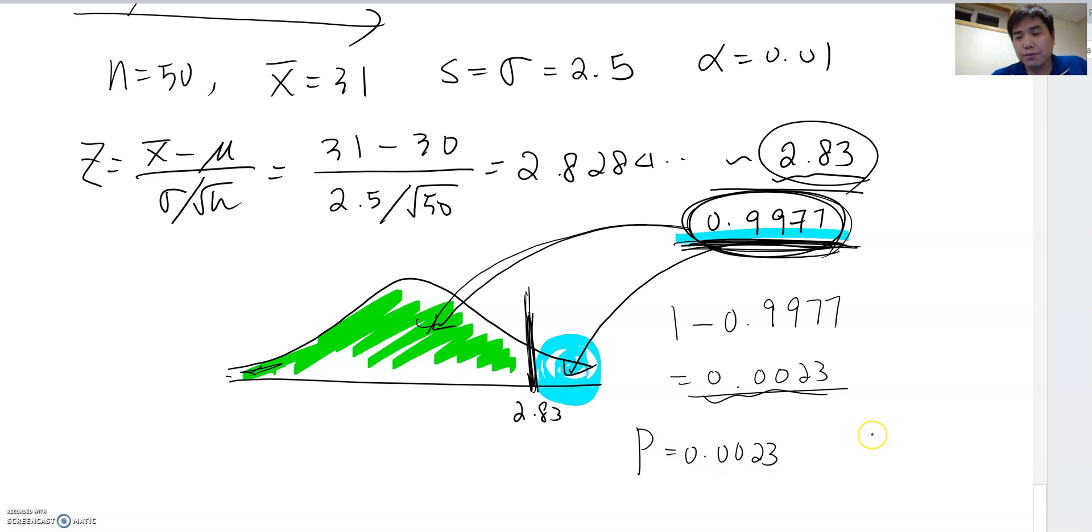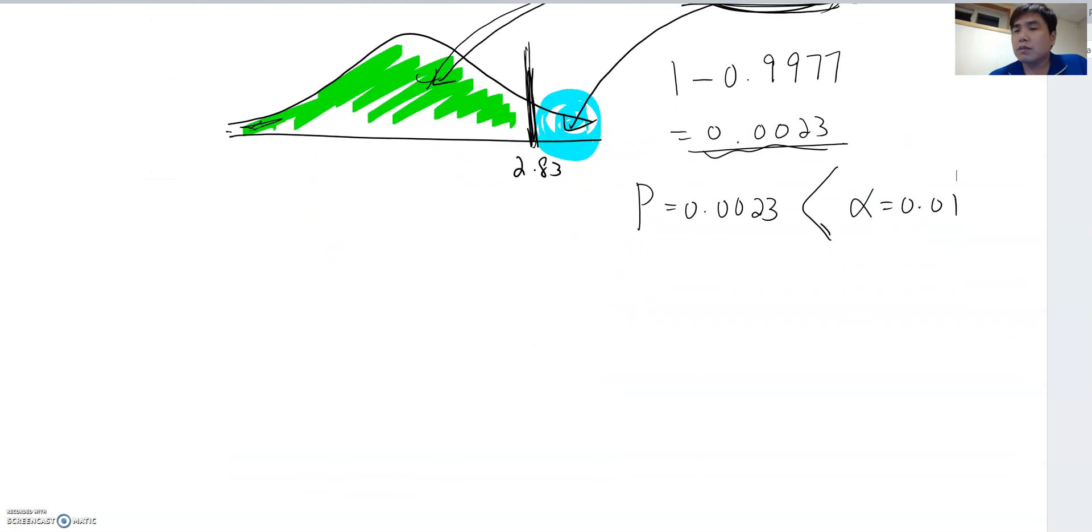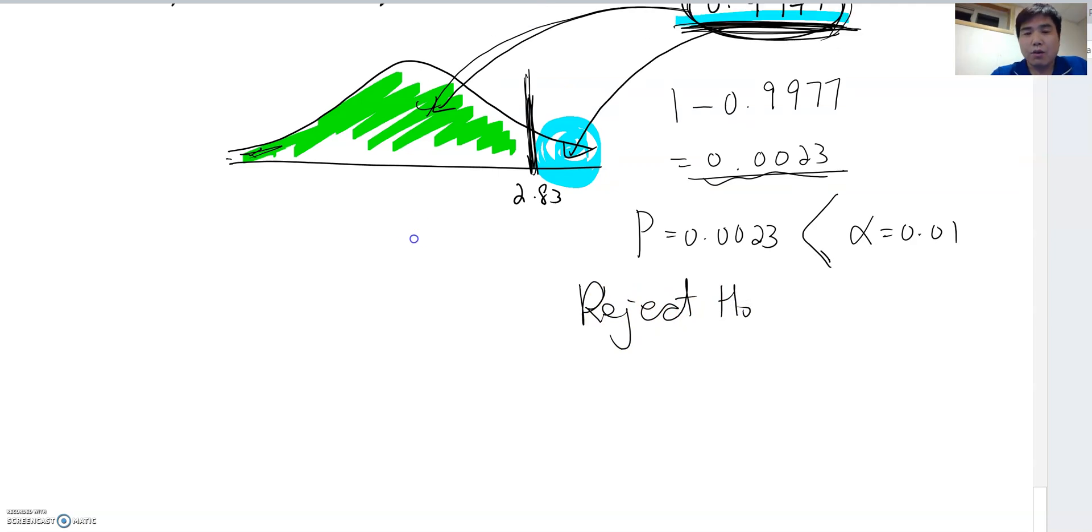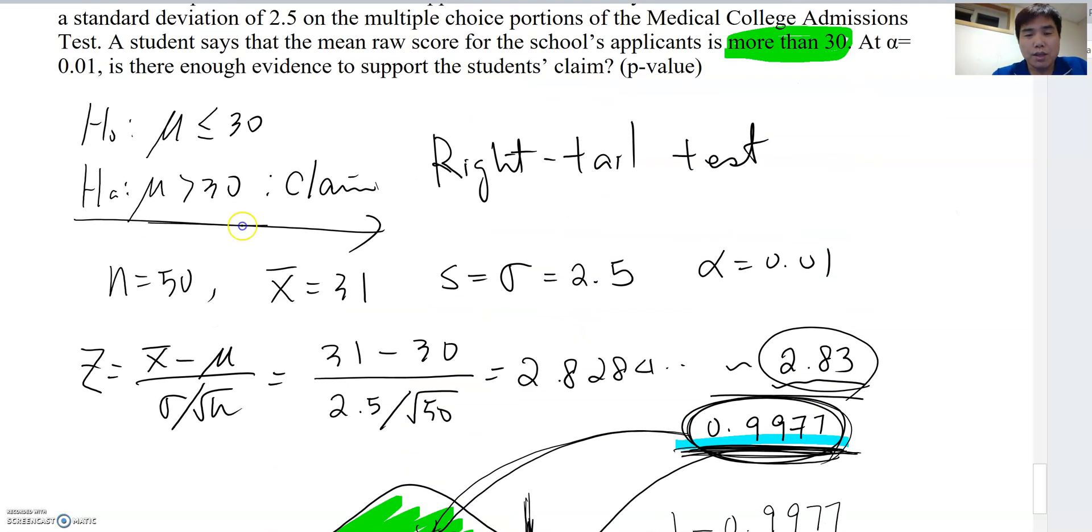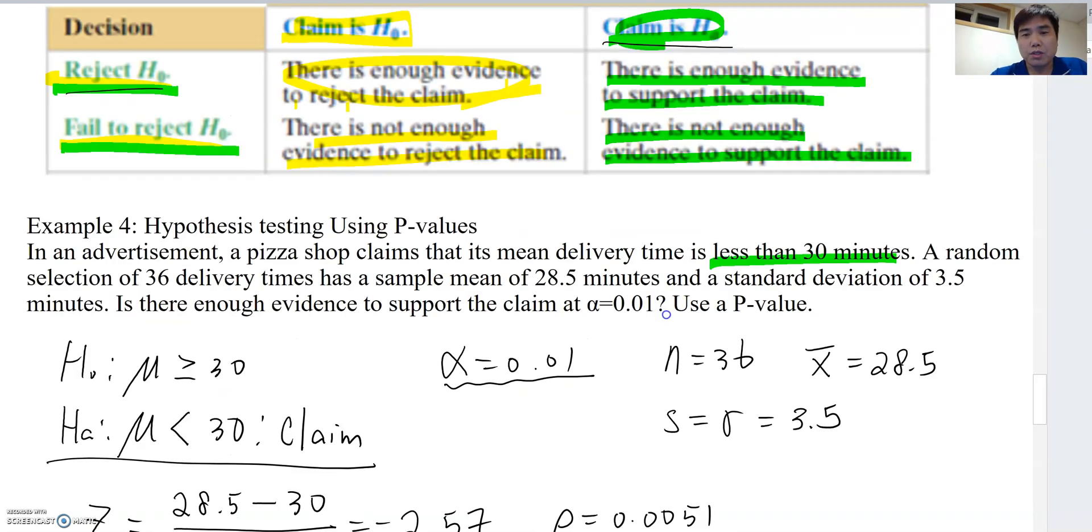What was our alpha value? Alpha equals 0.01. Now which one is greater? Yes, alpha is greater. Whenever alpha is greater, what do we conclude? We reject H0. Where was the claim? Claim was HA. Let's go back to the table we always use. Claim is in HA, and we reject H0, which means there is enough evidence to support the claim.